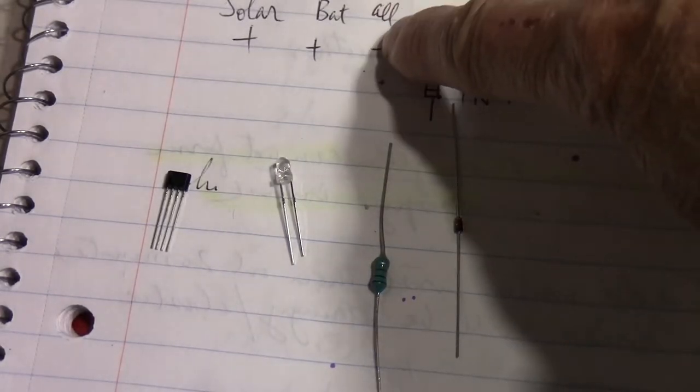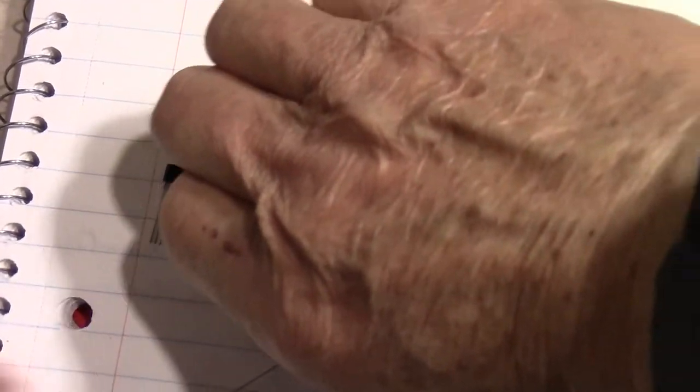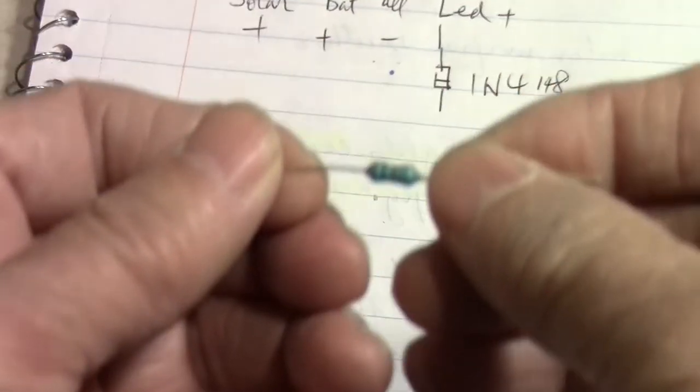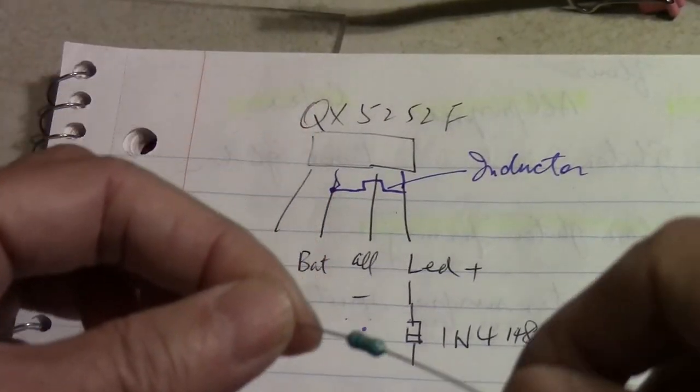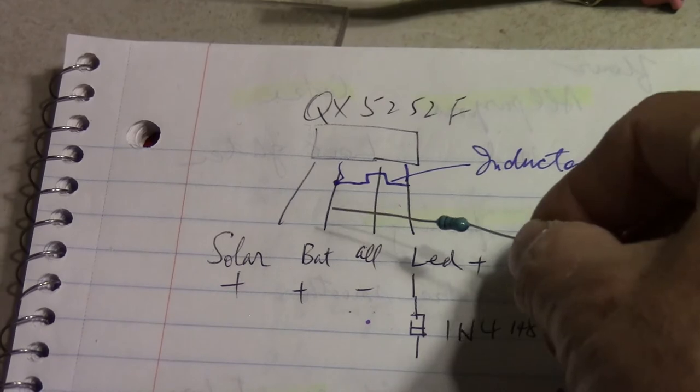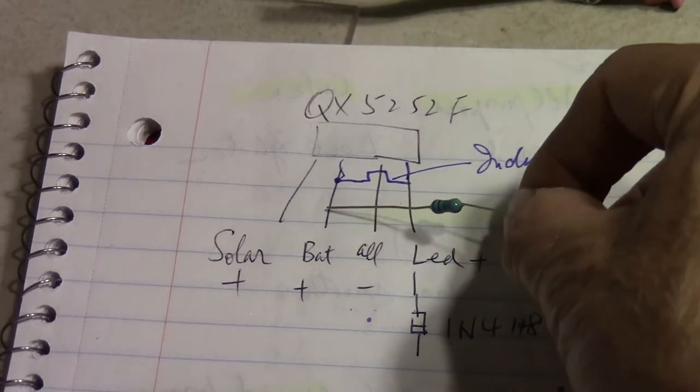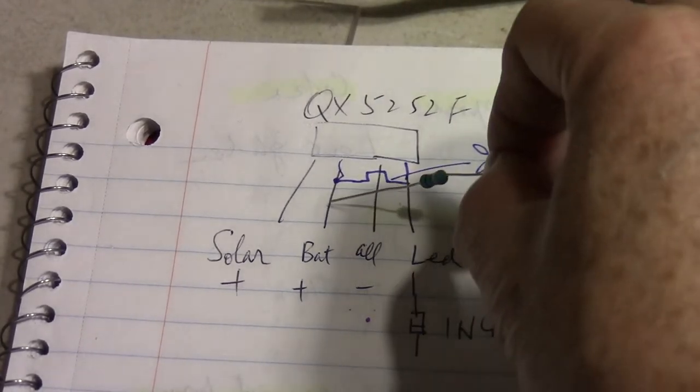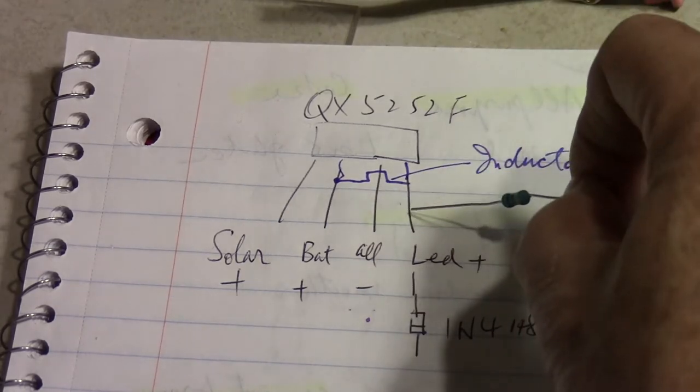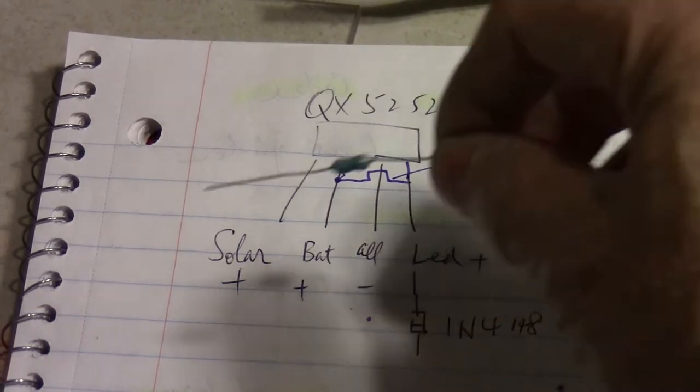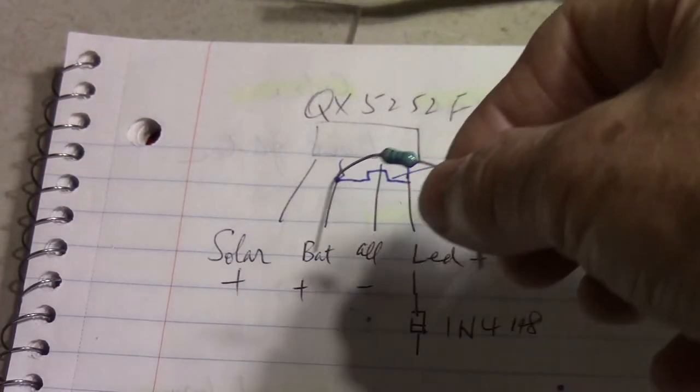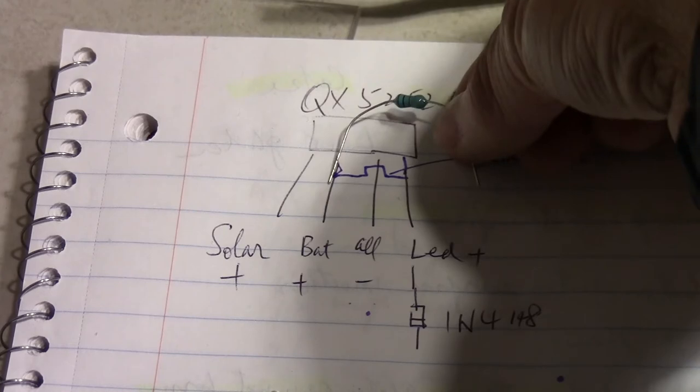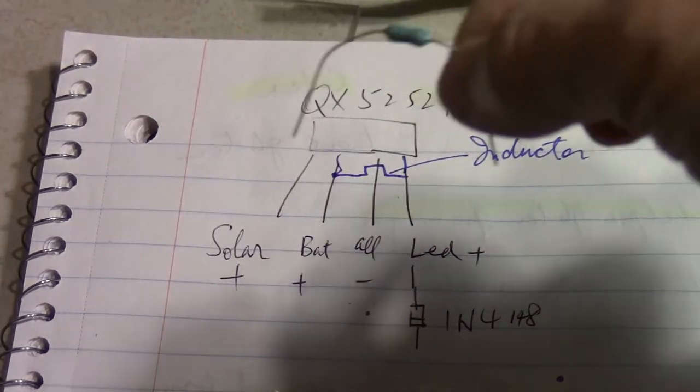Now the connection for the inductor is between the second and the fourth leg of the chip. It's from battery plus to LED plus. So you just bridge the two legs with the inductor. Basically that's the idea.